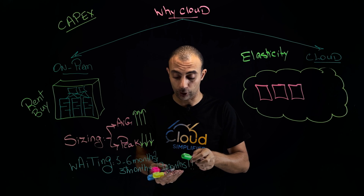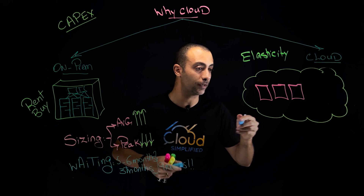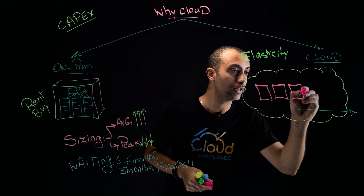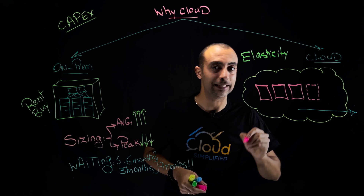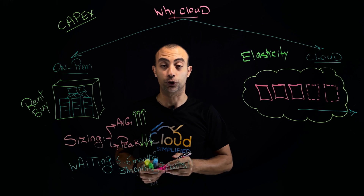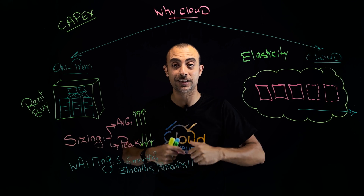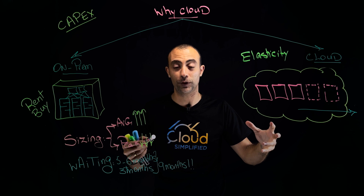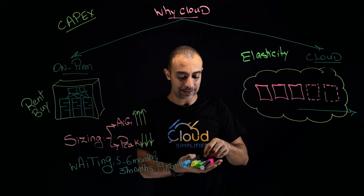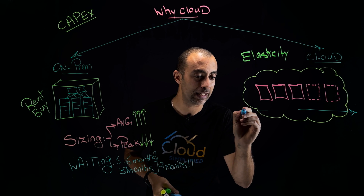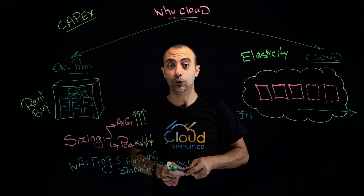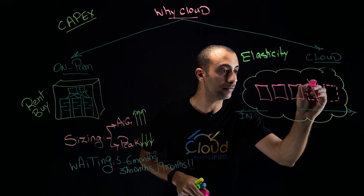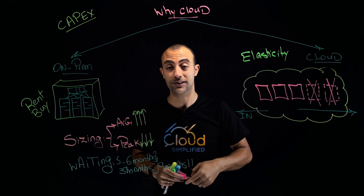With elasticity, you can scale out and scale in automatically. During peak times — like a Black Friday weekend — you can automatically add extra instances on the spot to absorb the extra load. Once the weekend ends, elasticity scales in automatically, terminating and decommissioning those extra instances since they're no longer needed.